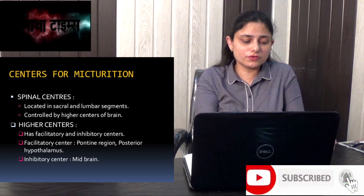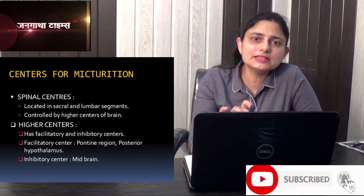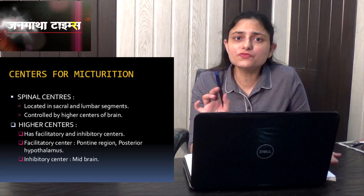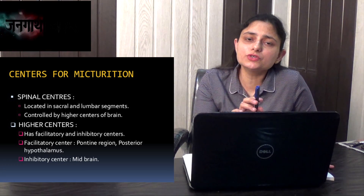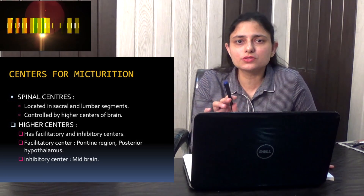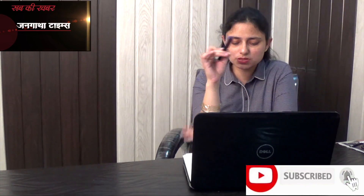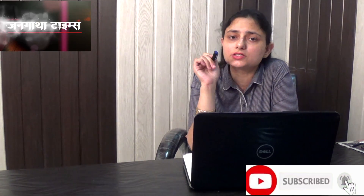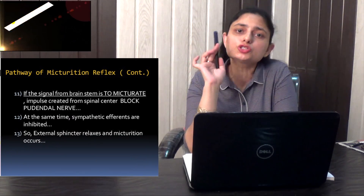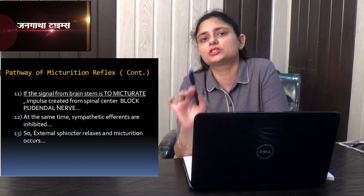There are two types of higher centers of the brain: the facilitatory center, which includes the pontine region and the hypothalamus, and the inhibitory center, which is the midbrain. The brainstem will then produce two types of signals — either it will signal to micturate or it will signal not to micturate.